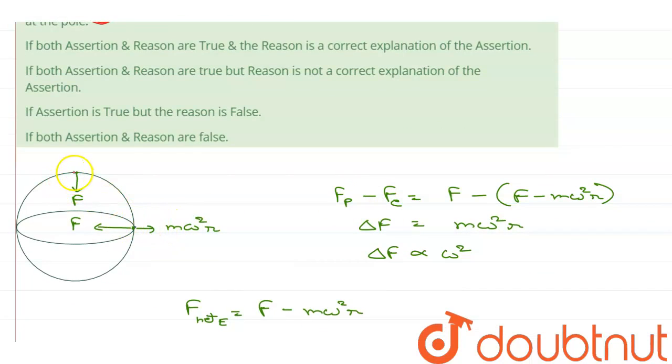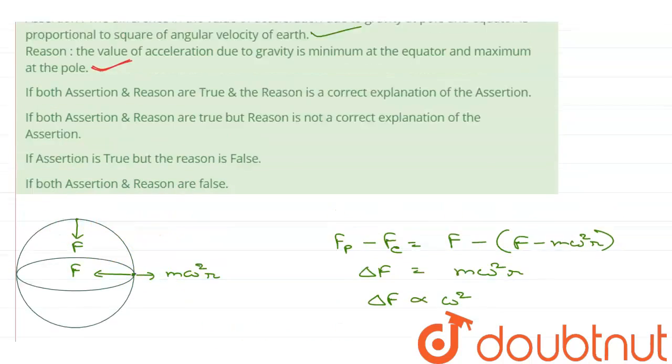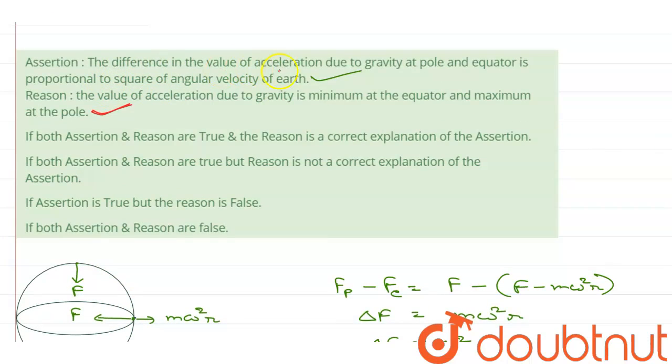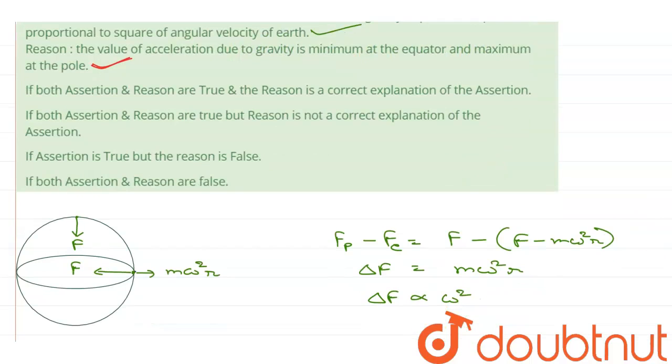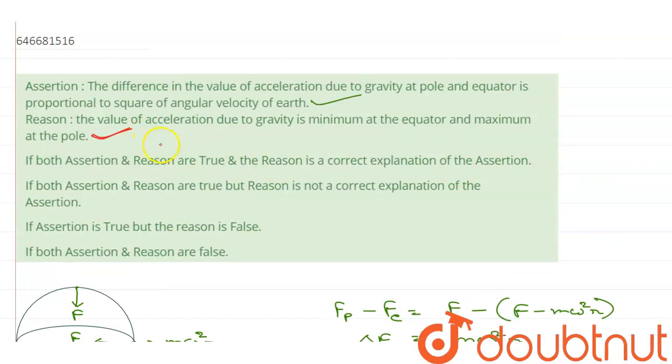The reason for the difference in value of acceleration due to gravity at pole and equator is because the centripetal force is not applicable at the poles while it is applicable at the equator. So, the assertion and the reason both are true, but the reason is not the correct explanation for assertion.